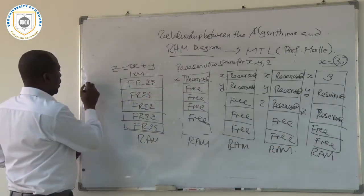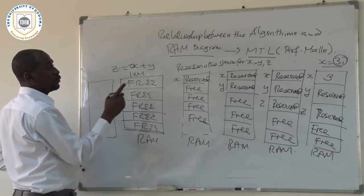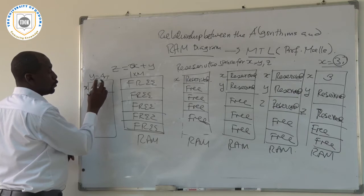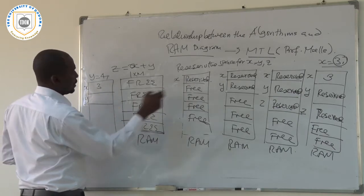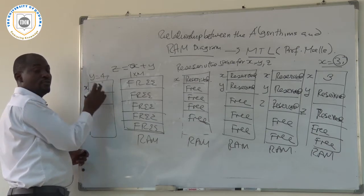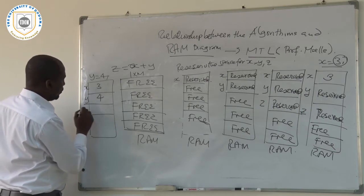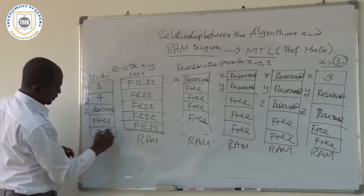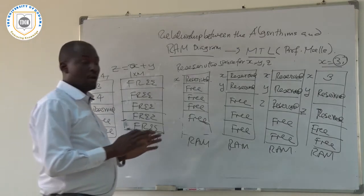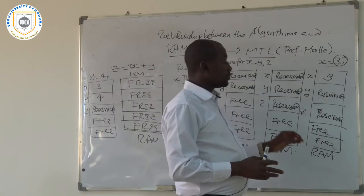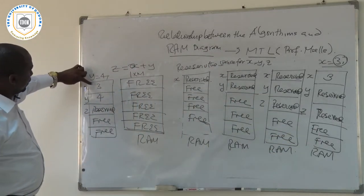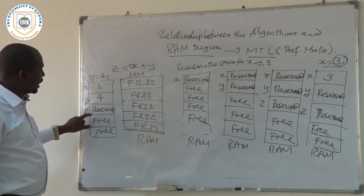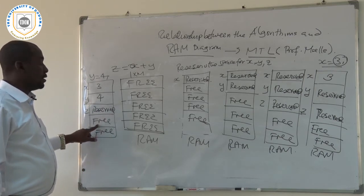Continuing to the next step, we give a value for Y. If Y is equal to 4, then 4 is stored in the space reserved for Y. X continues to hold 3, Y now holds 4, Z is still reserved, and the remaining two spaces are still free.